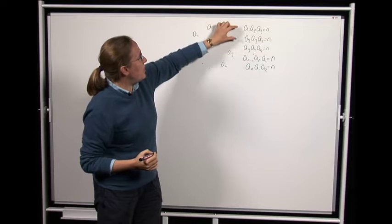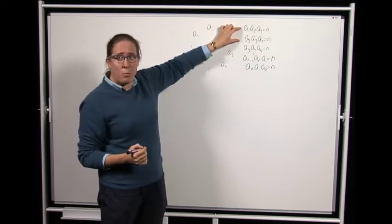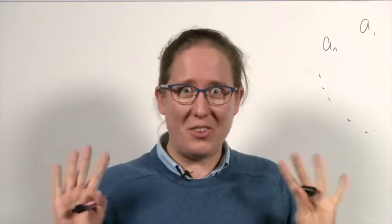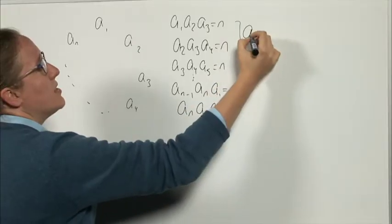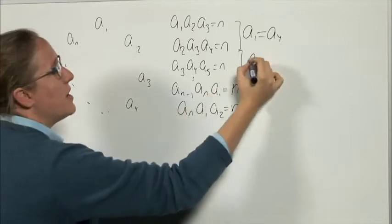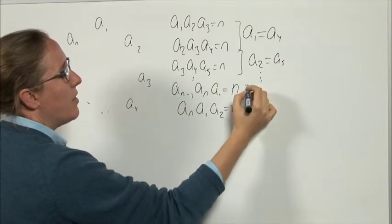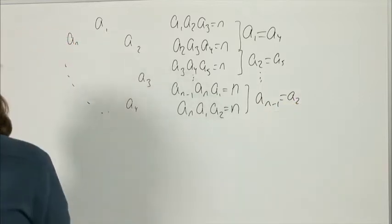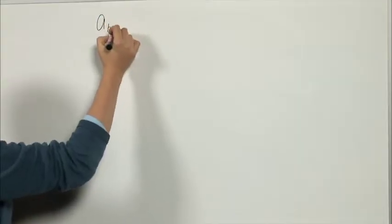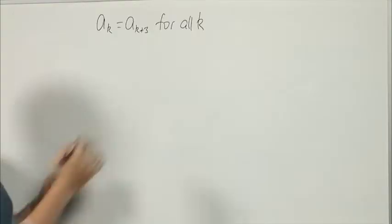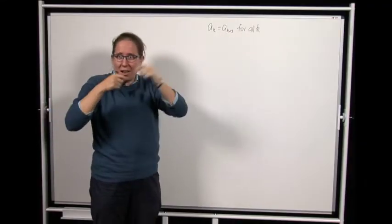Comparing consecutive equations — since a₁·a₂·a₃ = n and a₂·a₃·a₄ = n, and everything is positive, we get a₁ = a₄. Similarly the next pair gives a₂ = a₅, and continuing, aₙ₋₁ = a₂. We can summarise this as: aₖ = aₖ₊₃ for all k, where subscripts wrap around modulo n.